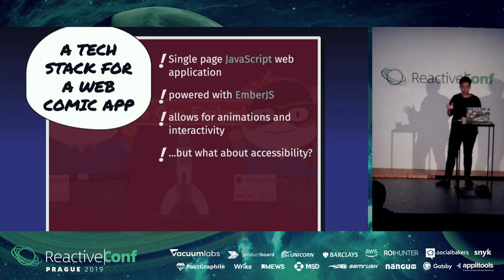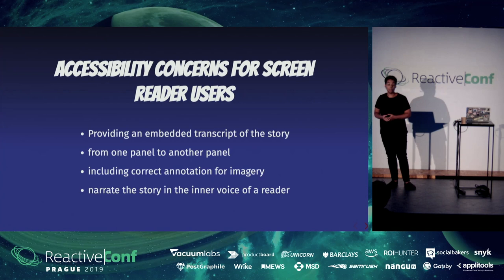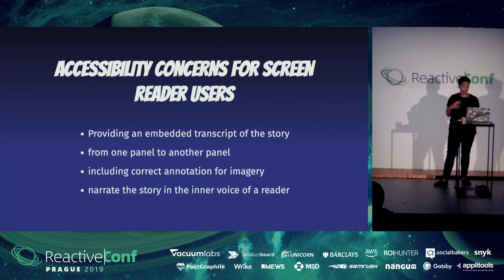Looking at accessibility, I realized there might be some constraints. For example, how do I actually narrate the story to blind users? How do I make a story that is usually only captured in images accessible to them? I thought it would be cool to have a transcript similar to the web comics example we saw, embedded into my story. By navigating from panel to panel, a screen reader user could still follow the story, while a sighted user would get the same experience — so I didn't have to duplicate all of the content.